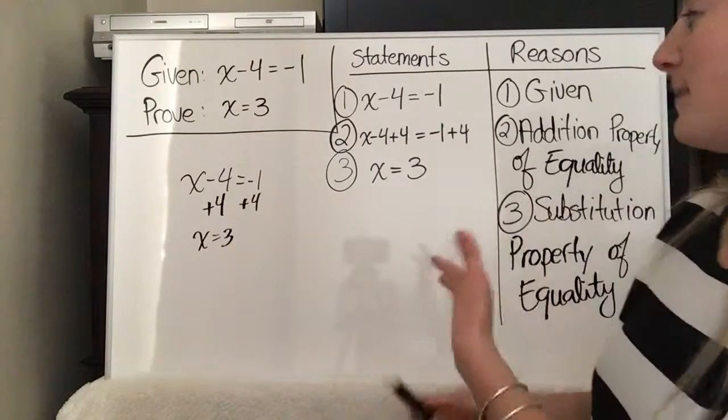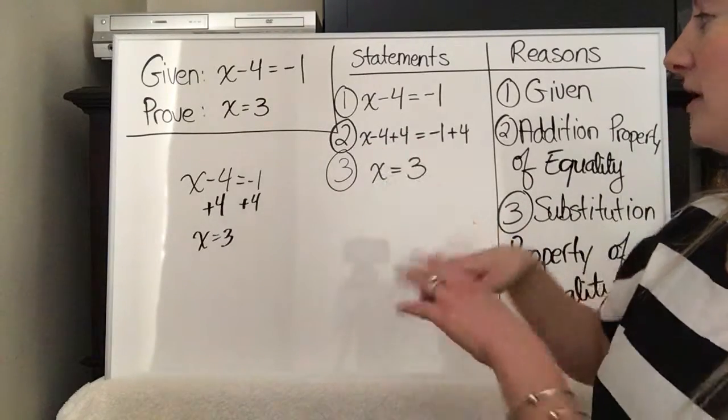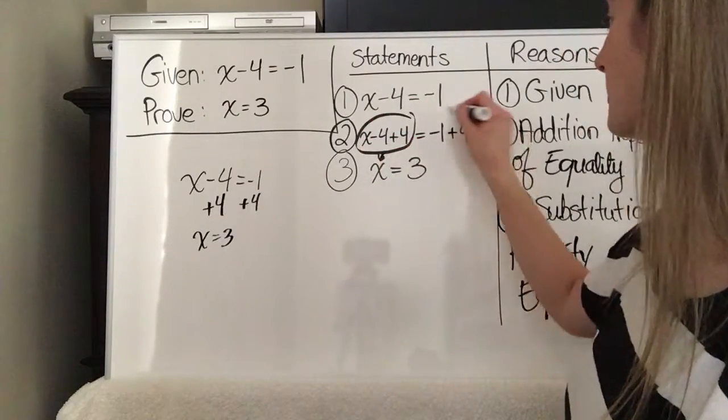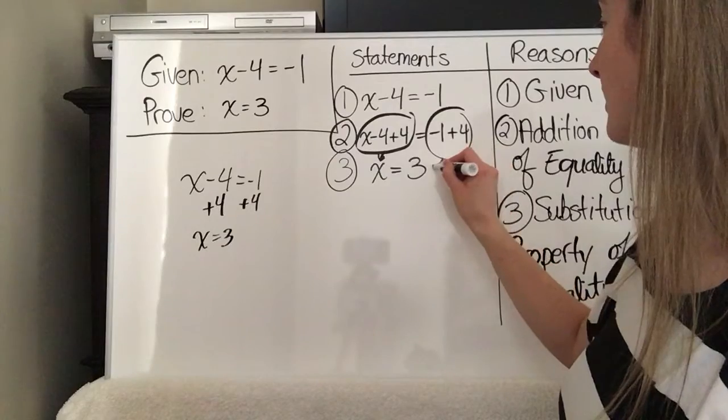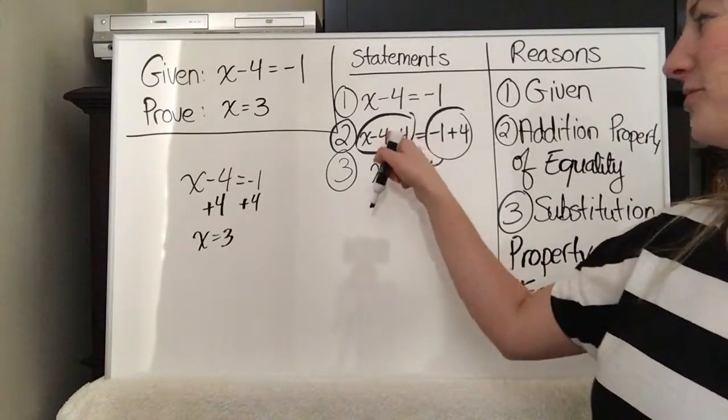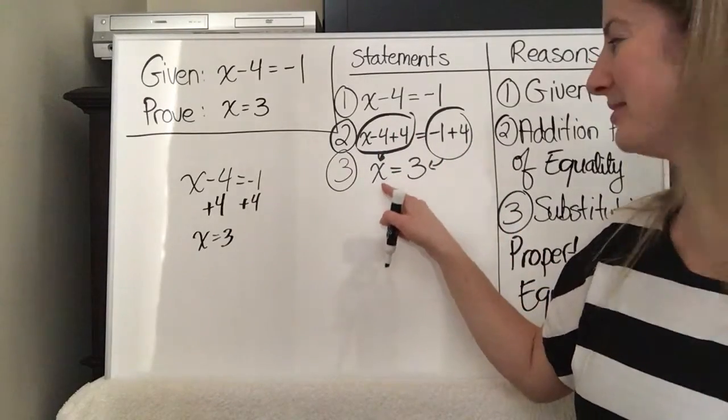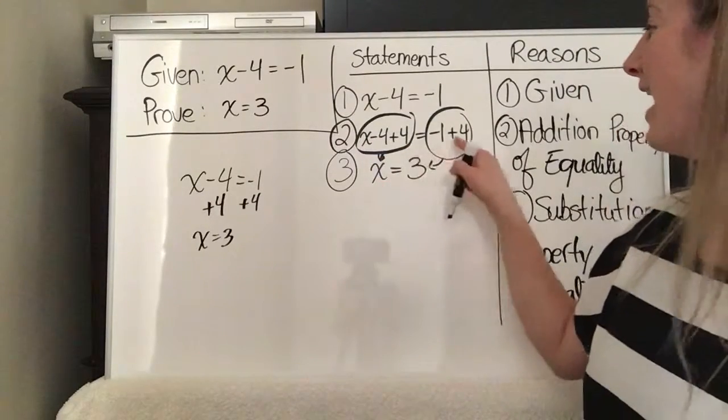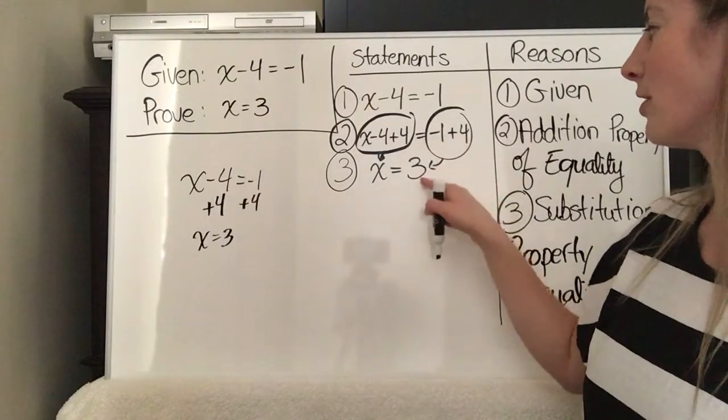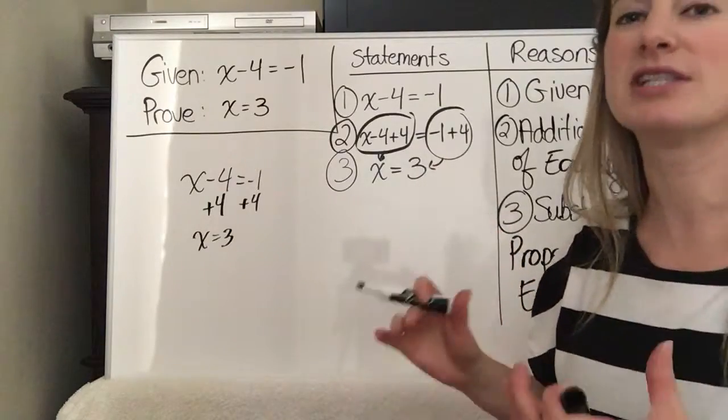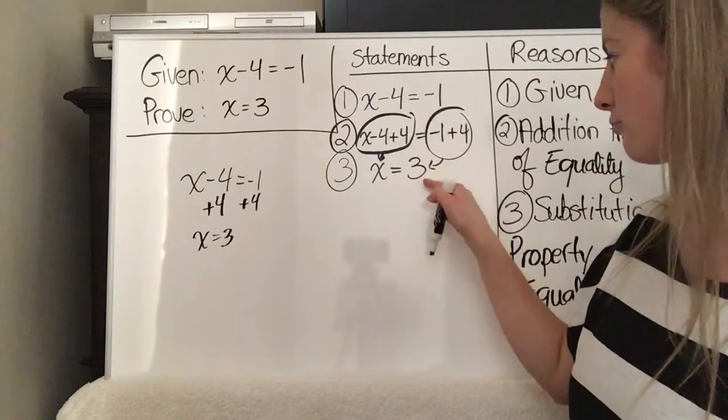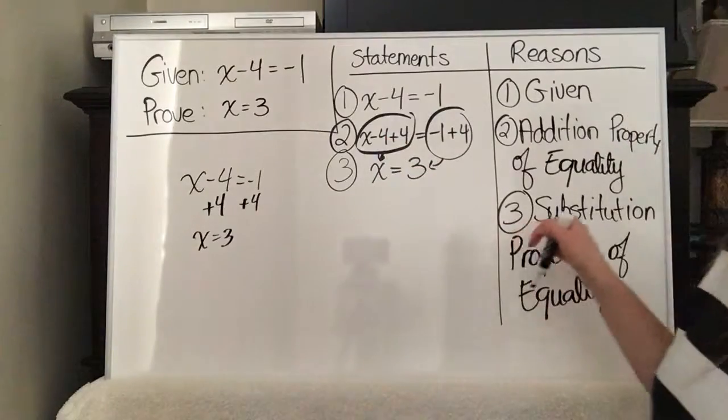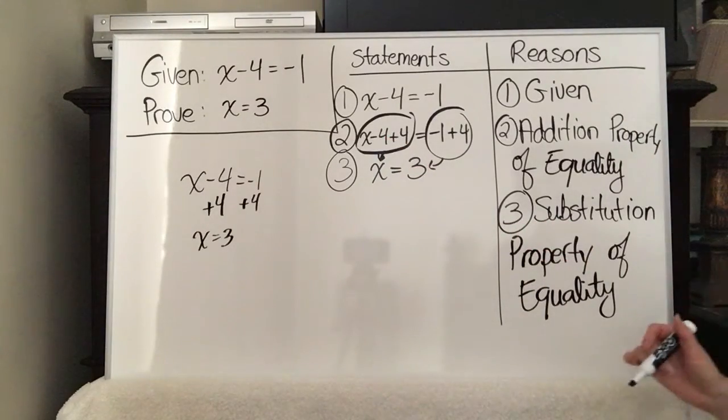And what that's basically saying is we substituted this piece right here for x, and we substituted, or actually, I shouldn't say we substituted this for x. I should say we substituted x in for this. So instead of writing this whole long thing, we could just write x. And instead of writing negative 1 plus 4, we could write 3. So it's substitution. We're substituting 3 for that, and we're substituting x for that. So it's the substitution property of equality, okay?